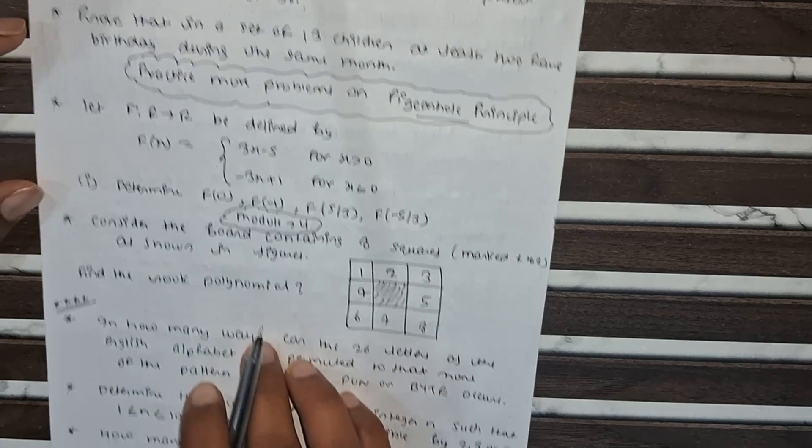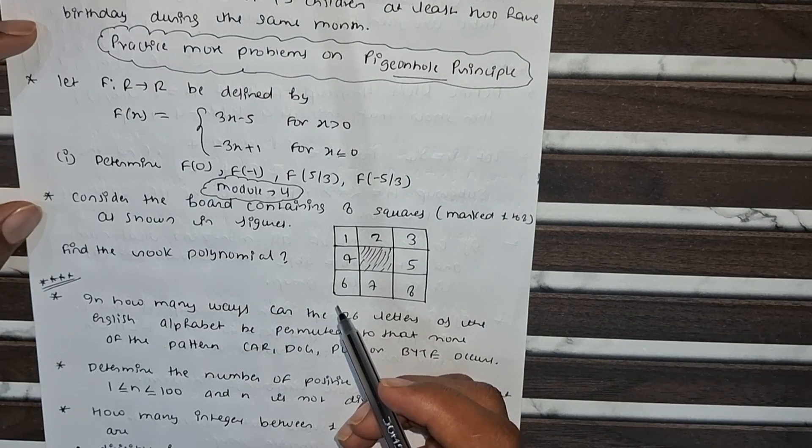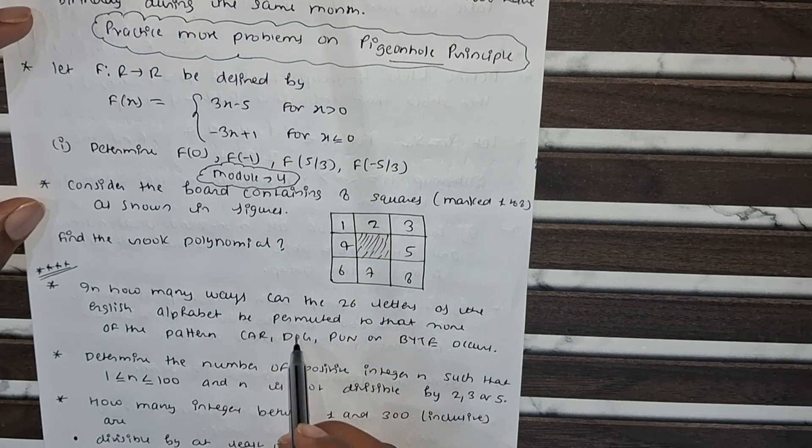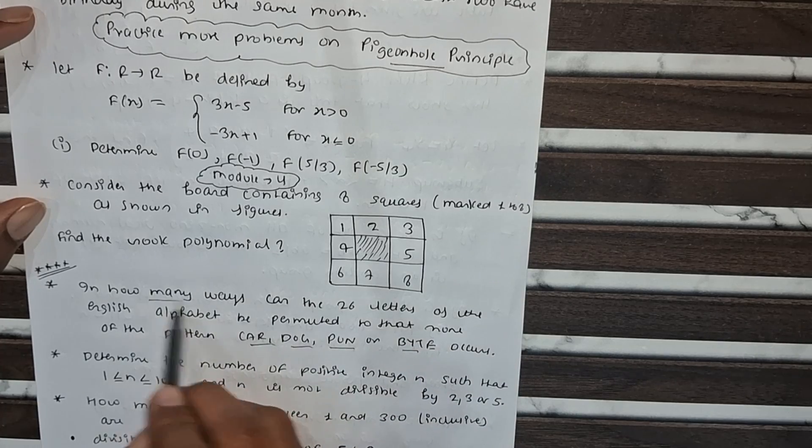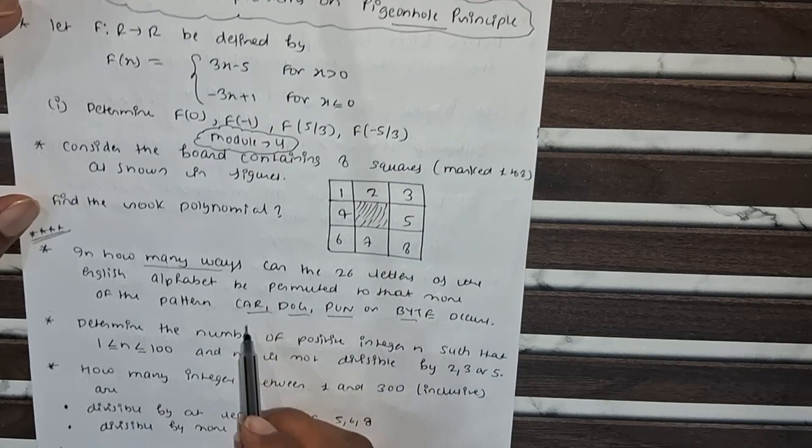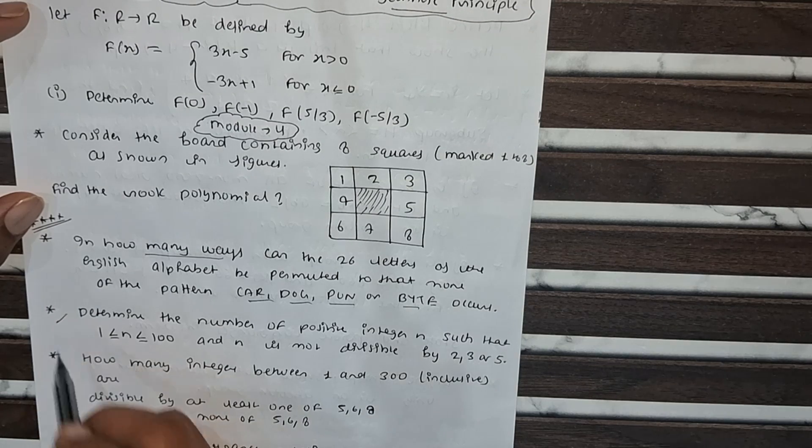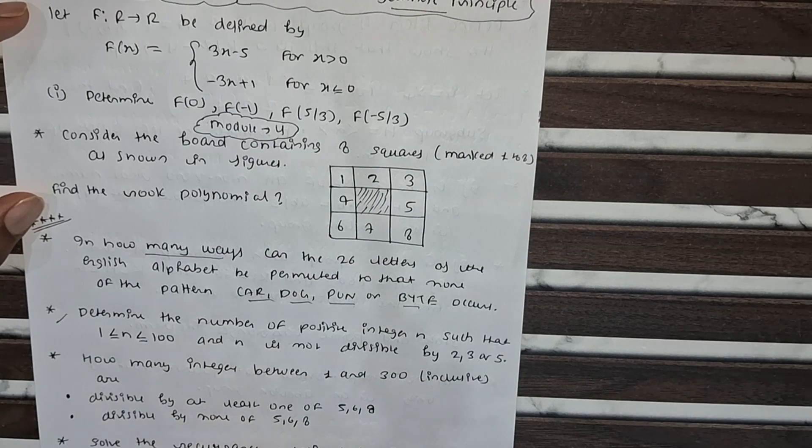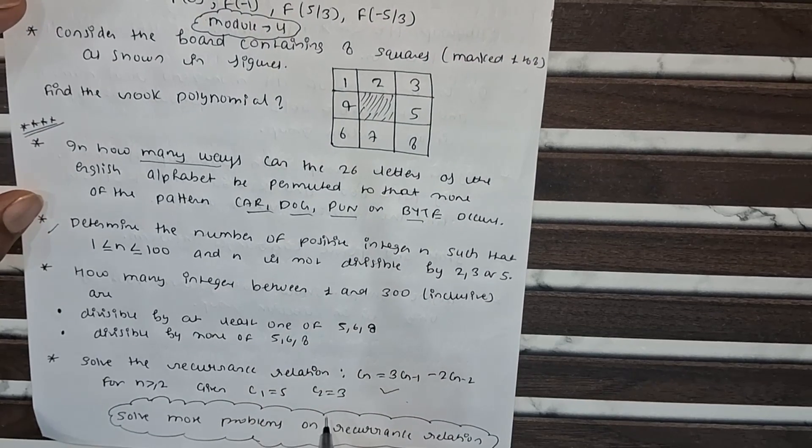Next is module 4. In module 4, this is one of the most important problems - how many numbers you can form. The next problem is on recurrence relations. You have to solve many problems on recurrence relations, as this is one of the most important topics.